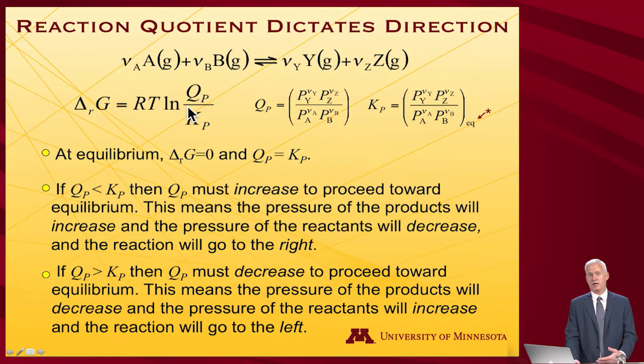So that implies a spontaneous process should occur in order to drive things towards products. Right? The pressure of the products will increase. The pressure of the reactants will decrease in order to bring this back to 1. Right? This is a constant. Q sub P needs to get larger. And so the pressures of the products need to increase relative to the pressures of the reactants to return this to a value of 1.